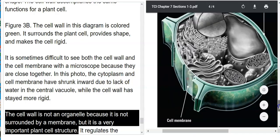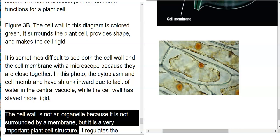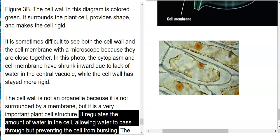The cell wall is not an organelle because it is not surrounded by a membrane, but it is a very important plant cell structure. It regulates the amount of water in the cell, allowing water to pass through but preventing the cell from bursting.